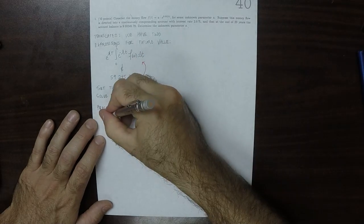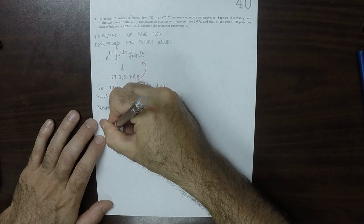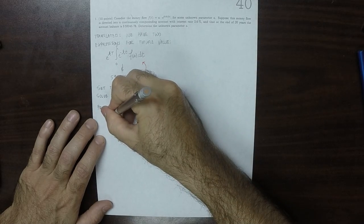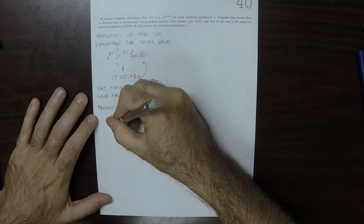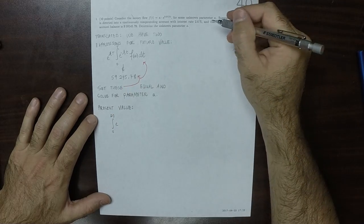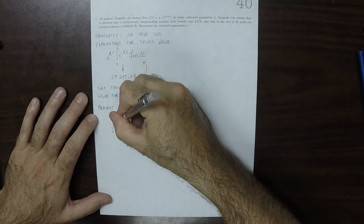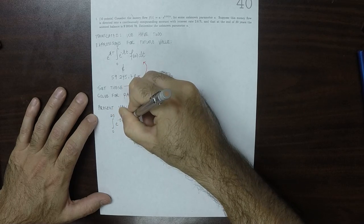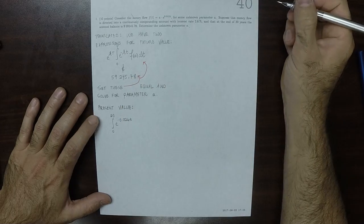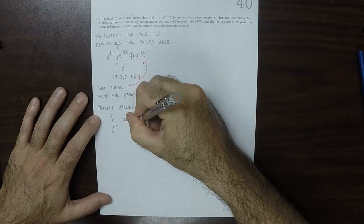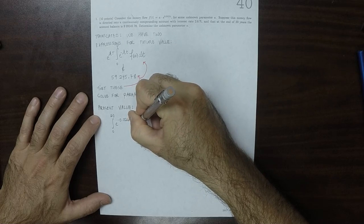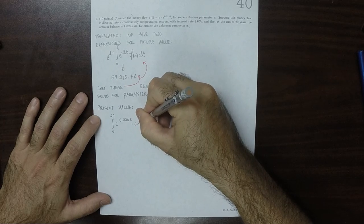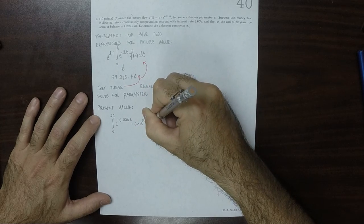So, present value. The present value is integral 0 to 20. And then, exponential negative 0.026 t multiplied by the flow. So that's A, exponential 0.013 t, dT.